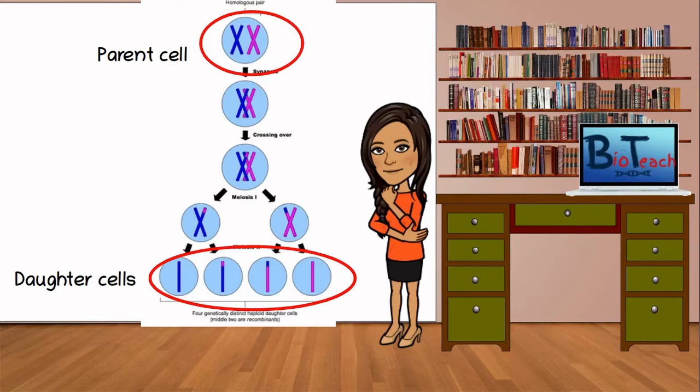Note also that this is a diagram that shows how we also end up with haploid cells. If you look at the parent cell, you've got the X-shaped chromosome, which shows the diploid parent cell that we begin with, and then at the end, we end up with haploid daughter cells.